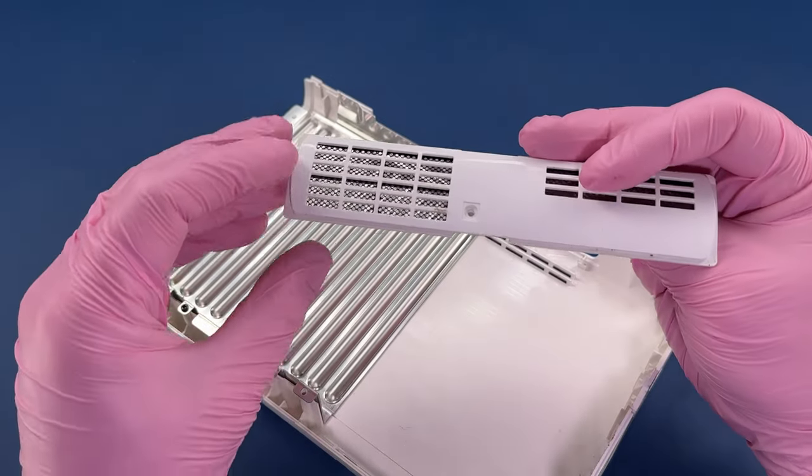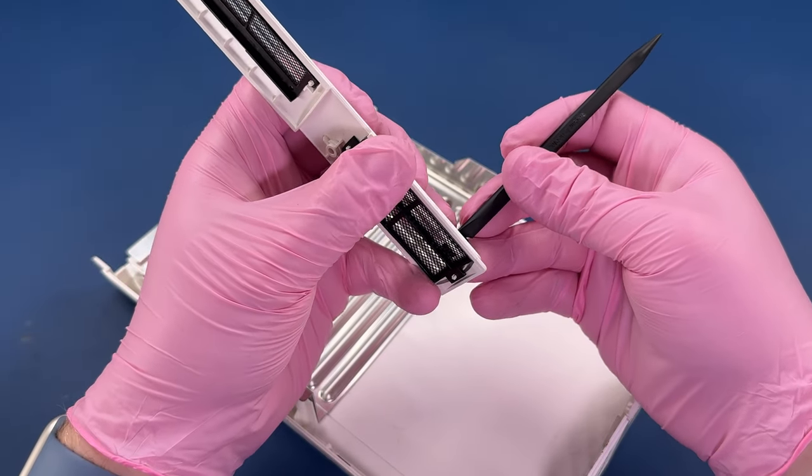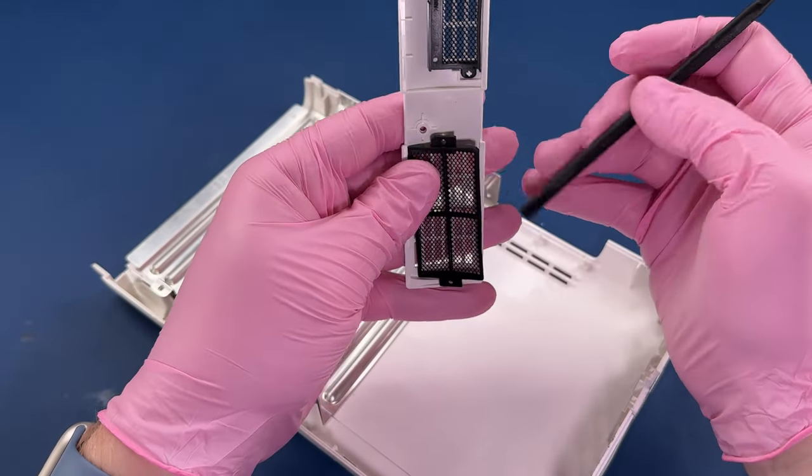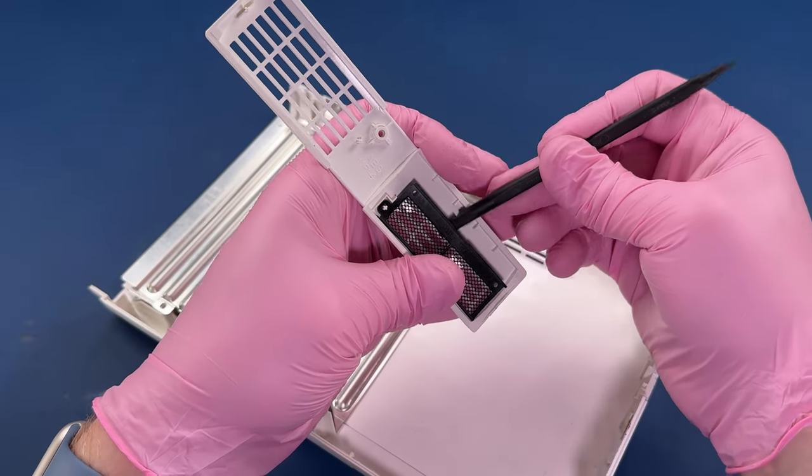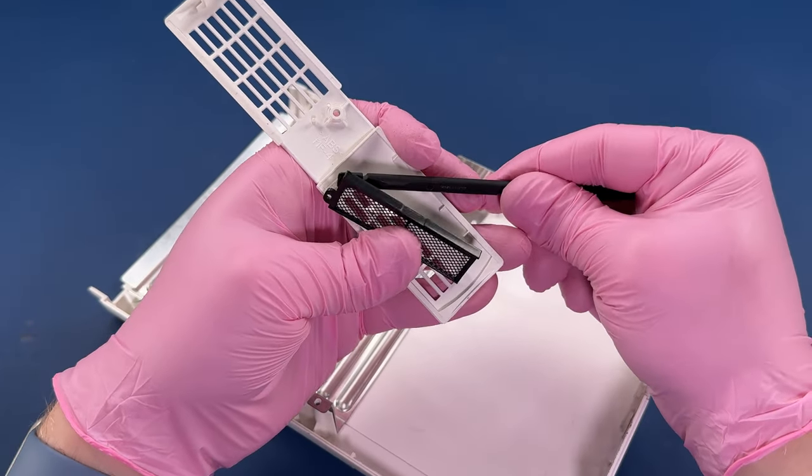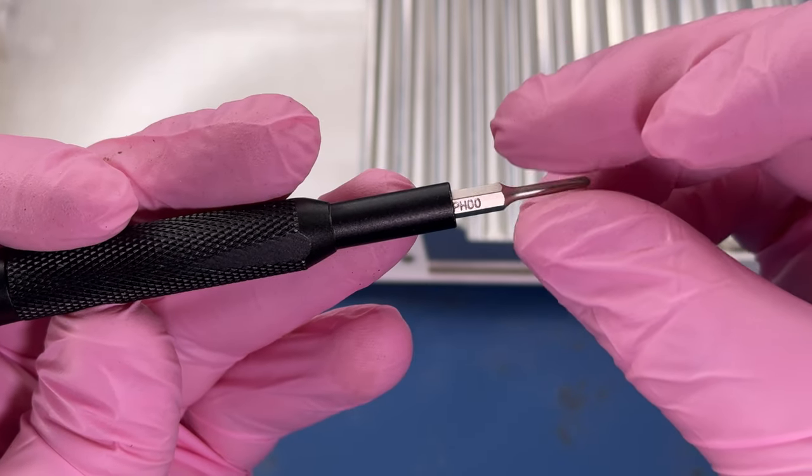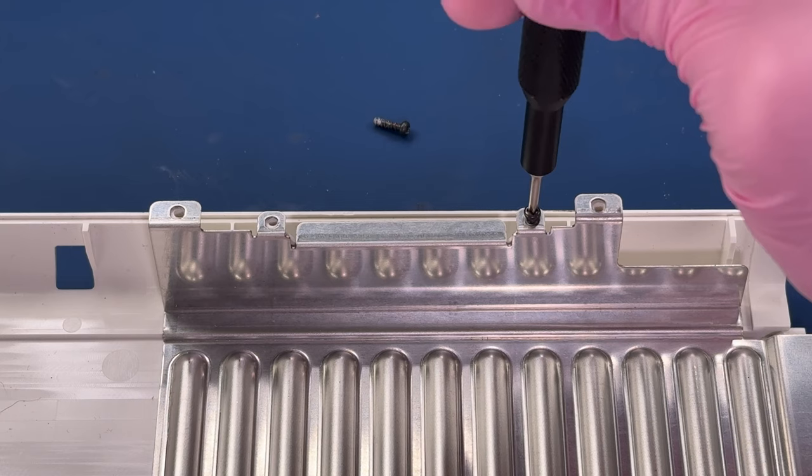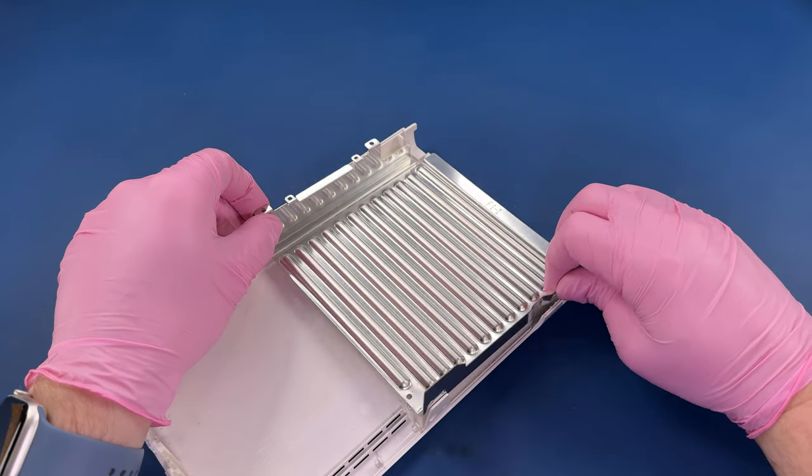This just pulls off. I'm going to carefully use my spudger to release this. I don't want to puncture a hole in any of this grate here, but I'm going to help release it. I also don't want to break the little white clips that are holding it on. A few more screws and we can remove this shield.